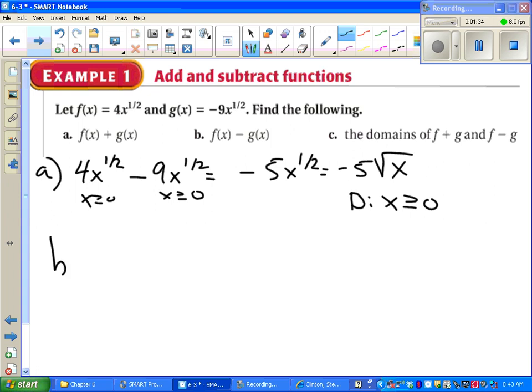That's it. Part b, a similar problem, 4x to the 1 half minus negative 9x to the 1 half. And we see once again that the domain is all numbers bigger than or equal to zero.